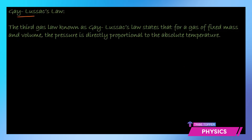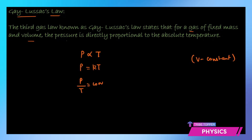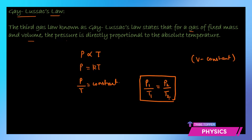The third one is Gay-Lussac's Law. This states that for a gas of fixed mass and volume, the pressure is directly proportional to the absolute temperature. Volume is constant, and pressure is directly proportional to temperature. So P equals some constant k times T, giving the ratio P/T as a constant. In mathematical problems you use p1/t1 = p2/t2, keeping volume constant.